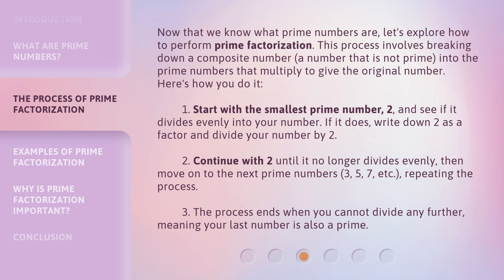Here's how you do it. Step 1: Start with the smallest prime number, 2, and see if it divides evenly into your number. If it does, write down 2 as a factor and divide your number by 2. Step 2: Continue with 2 until it no longer divides evenly, then move on to the next prime numbers — 3, 5, 7, etc. — repeating the process. Step 3: The process ends when you cannot divide any further, meaning your last number is also a prime.